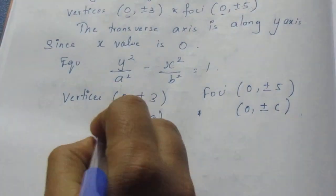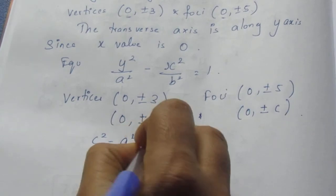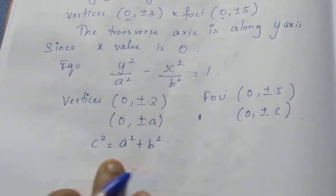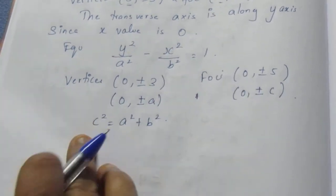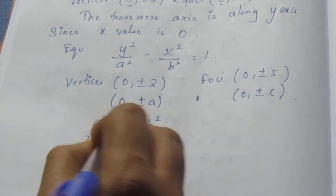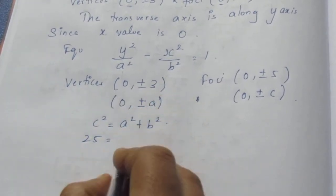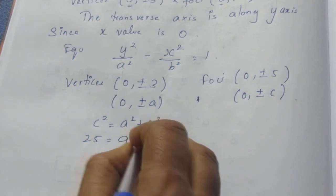We know the c² formula as a² + b². If we substitute in this, we can find b. Now c² is 5², 25 = a², 3² is 9 + b².